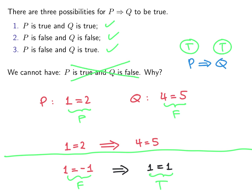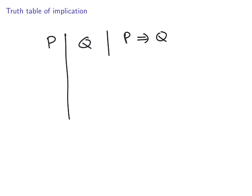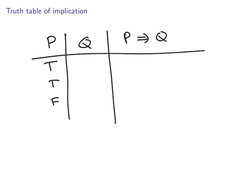Let's now summarize all four possibilities — or non-possibility in the last case — in a truth table. The truth table of implication: when P is true and Q is true, the implication is true. When P is true and Q is false, the implication is false. When P is false and Q is true, it can happen. When P is false and Q is false, it can also happen.